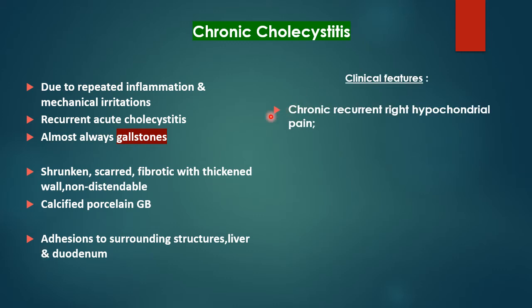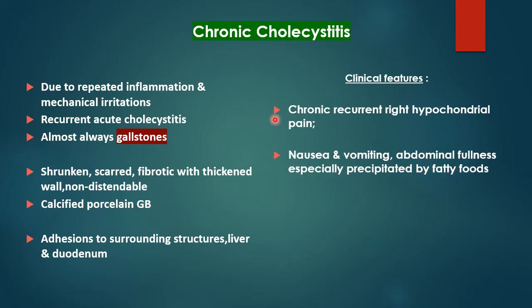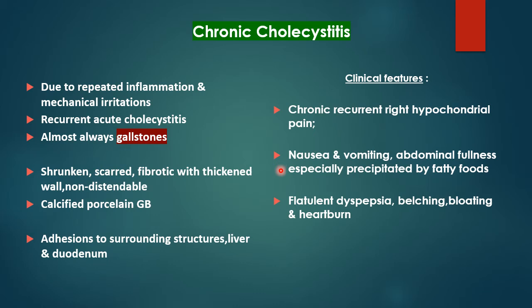Clinical features of chronic cholecystitis: chronic recurrent right hypochondrial pain associated with nausea and vomiting, abdominal fullness especially precipitated by fatty food, flatulent dyspepsia, belching, bloating, and heartburn. In these patients, examination signs may be positive but are often negative.